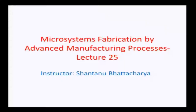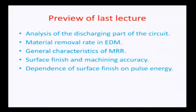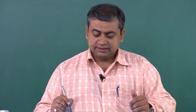Hello and welcome back to lecture 25 on Microsystems Fabrication by Advanced Manufacturing Processes. A quick recap of the last lecture: we talked about the analysis of the discharging part of the RC relaxation circuit, the material removal rate in EDM (particularly for mild steel with an empirical relationship based on power in kilowatts and material removal in mm³/min), general characteristic trends of MRR with respect to circuit parameters like resistance, capacitance, total discharge current, and spark gap, as well as surface finish, machining accuracy, and the dependence of surface finish on pulse energy of the EDM system.